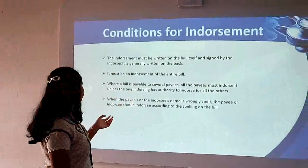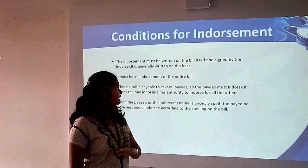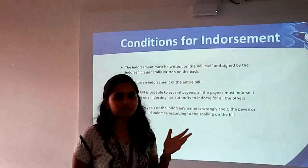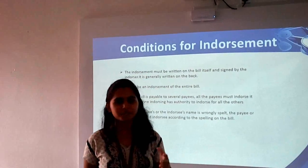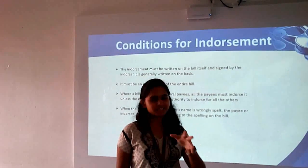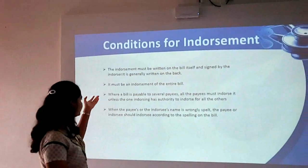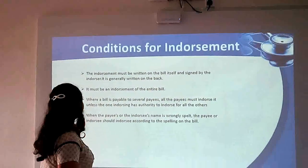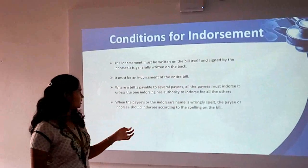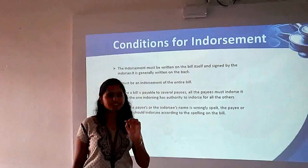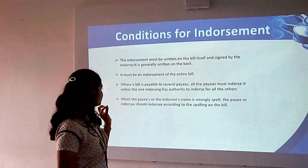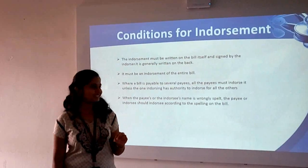Next are the conditions for endorsement. First, the endorsement must be written on the bill itself and signed by the endorser — it must be clearly written on the back. For example, if a bill is for RM100, it is not permissible to endorse it for RM40 for A and RM60 for B. It must be an endorsement of the entire bill. Third, where the bill is payable to several payees, all of them must endorse it unless the one endorsing has authority to endorse for all the others. When the payee's or endorsee's name is wrongly spelled, the endorsement should match the spelling on the bill.